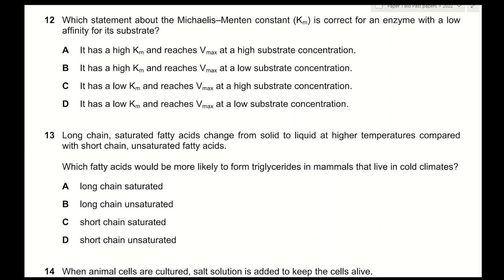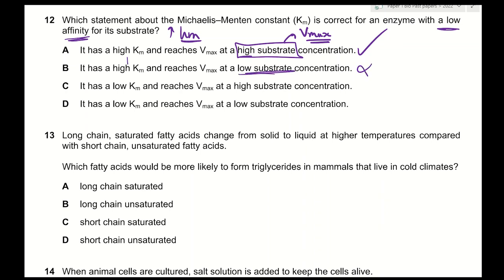Question 12: which statement about the Michaelis-Menten constant Km is correct for an enzyme with a low affinity for its substrate? Low affinity means a higher Km value — they are inversely proportional. A — it has a high Km and reaches Vmax at a high substrate concentration — correct: a low-affinity enzyme requires more substrate to reach Vmax. B — high Km but reaches Vmax at a low substrate concentration — incorrect. The correct answer is A.